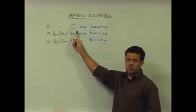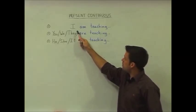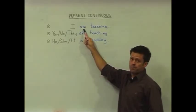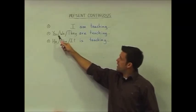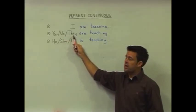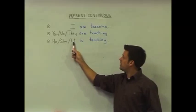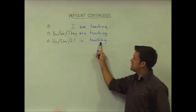We have three different forms of this tense. First we have the subject I, used with am teaching. Then we have you, we, and they are teaching. Finally we've got he, she, it is teaching.